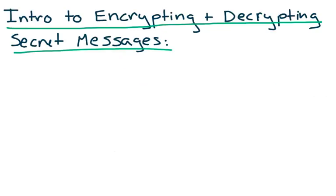So that's it for this series. We've seen how the sender will encrypt his message using public key values, and how the key generator will decrypt this message using the private key value of d. Thanks so much for listening.